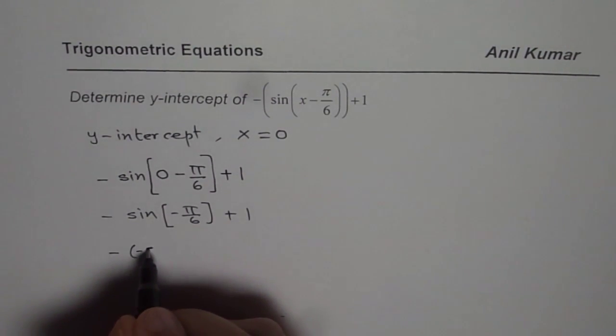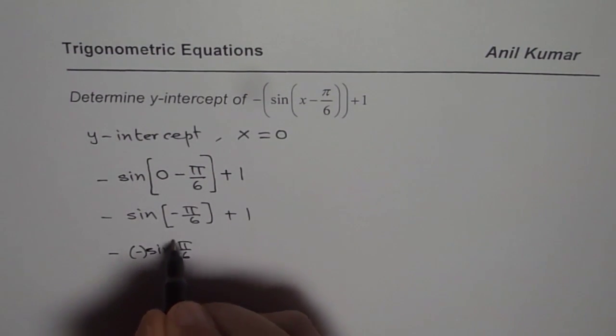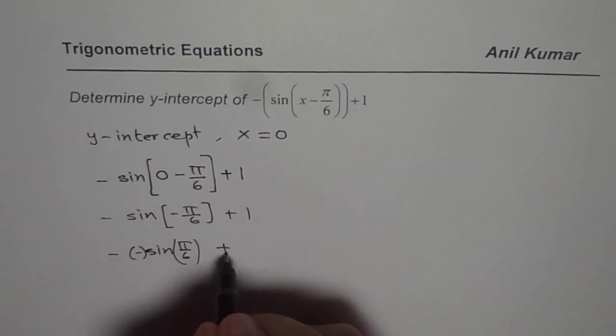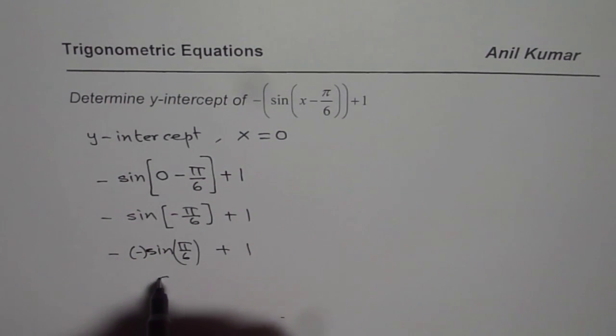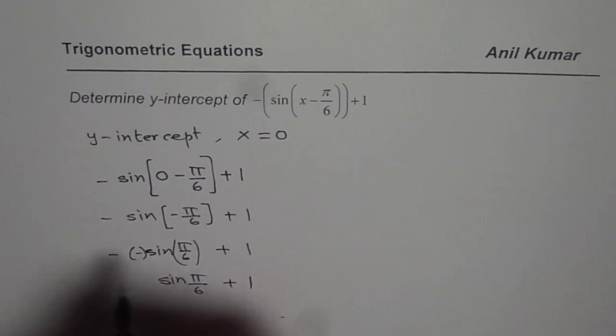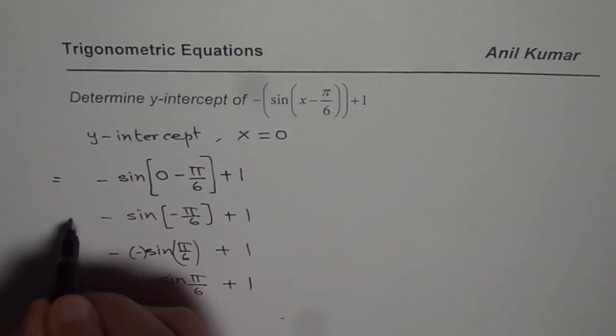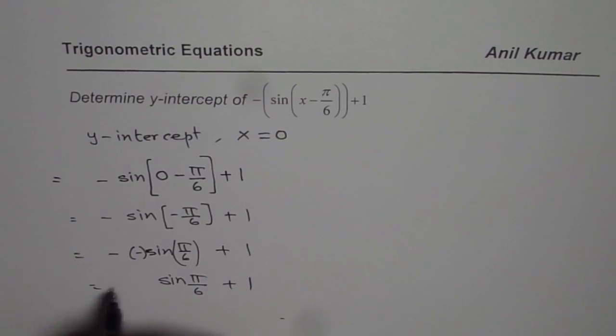So we get minus of minus sine π/6. Since sine is an odd function, we get sine π/6 plus 1. So that is how we can actually solve this.